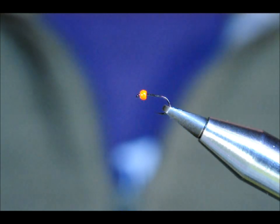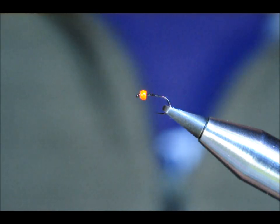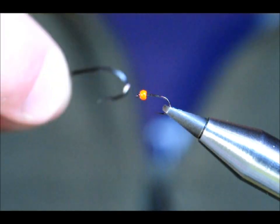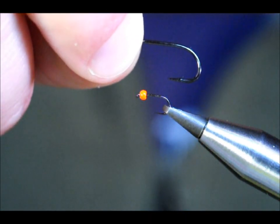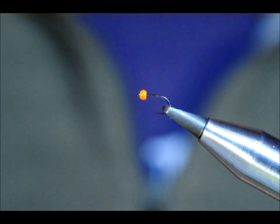This is a Varivas size 22 hook, and just to give you some idea of the size of the hook we are tying on today, this is a Hayabusa 561 in size 10. So as you can see it's very small.